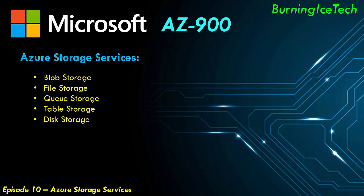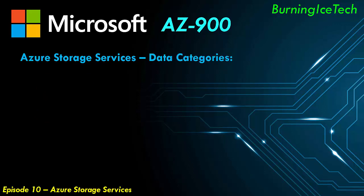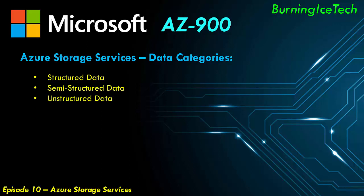Before we can go ahead and talk about these services, we need to quickly take a look at the general classification of the types of storage we actually get. There are different data categories: the first being structured data, semi-structured data, and lastly unstructured data. This is a general classification for the types of data we're going to be using.